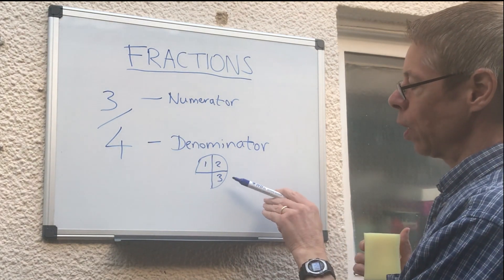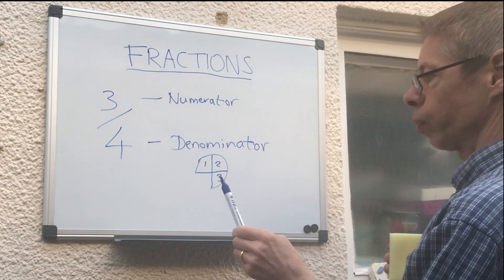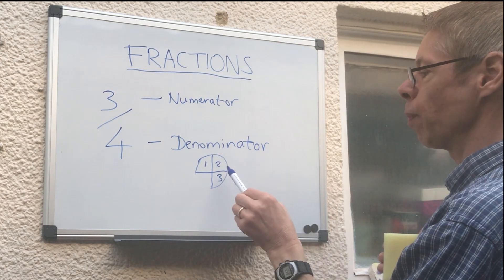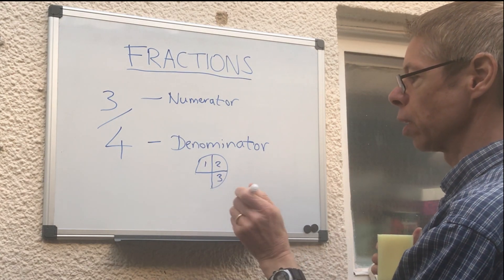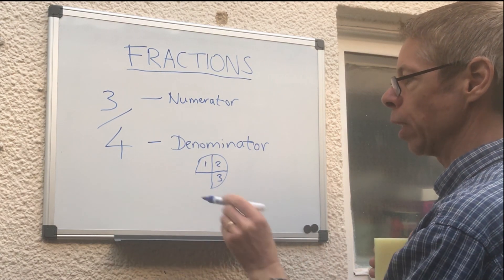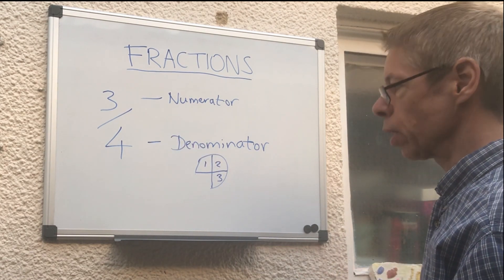If you look at that diagram, everyone knows that as 3 quarters. So what's happened? We divided our biscuit into 4, we took 3 of the pieces and not the other piece. So that's where the fraction 3 quarters comes from.